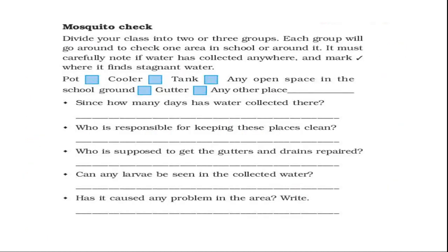Now, mosquito check, page number 73. Observe the base and follow the answers. The first question: divide your class into two or three groups. Each group will go around to check one area in school or around it. Carefully note if water has collected anywhere and mark a tick where stagnant water is found. You may find water in pots, coolers, tanks, any open space in the school ground, gutters, or any other place.